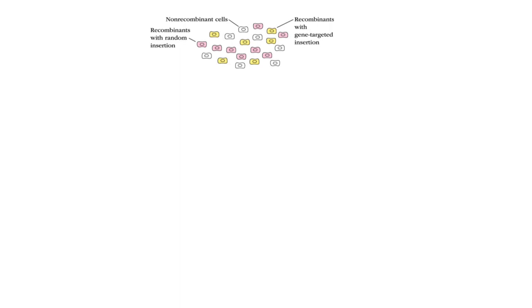Now we will see how we select the cells. There are three different types: non-recombinant cells, recombinant cells with random insertion, and recombinant cells with gene-targeted insertion.